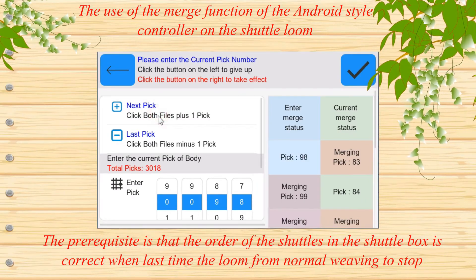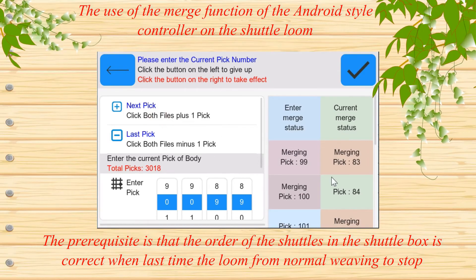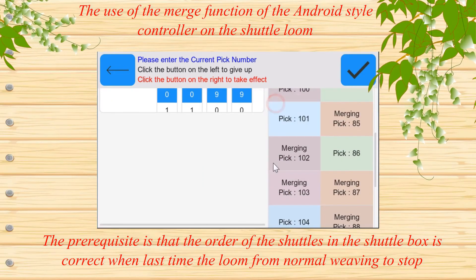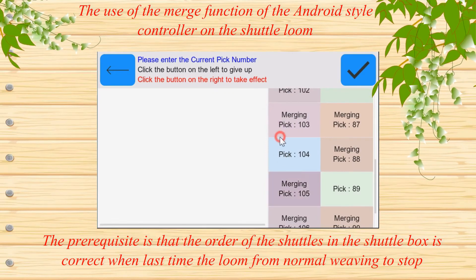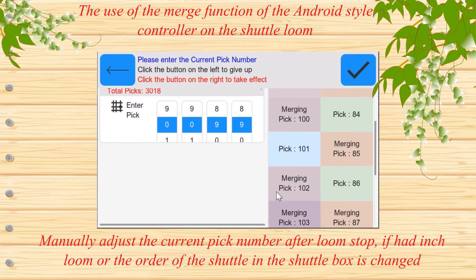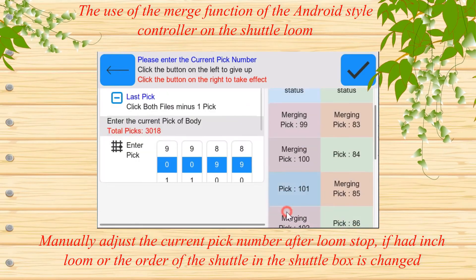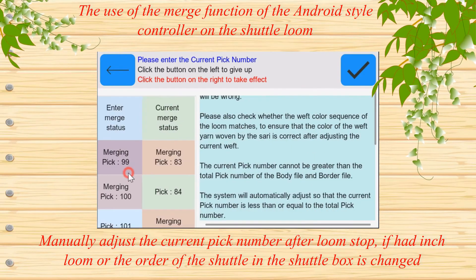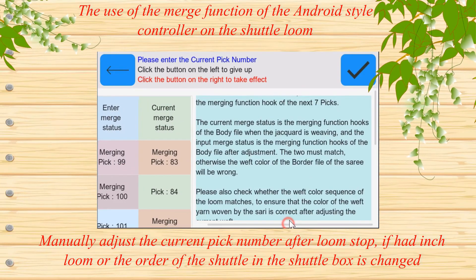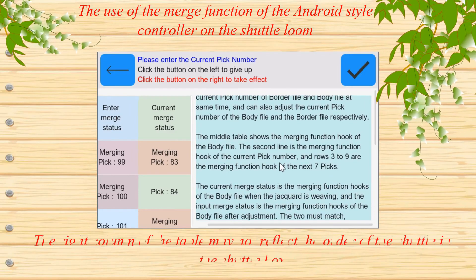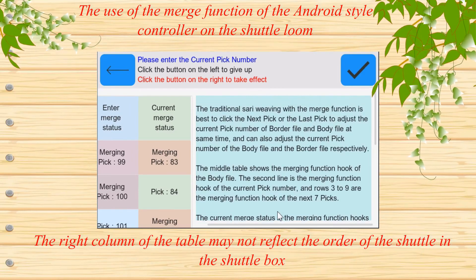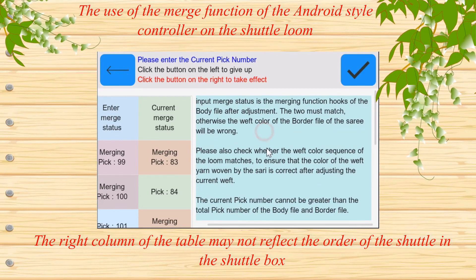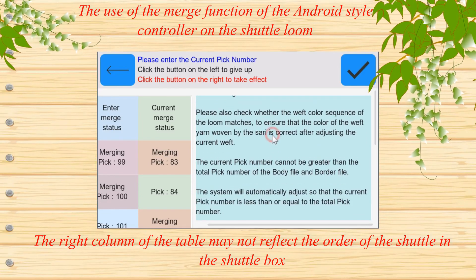The prerequisite for the right column is that the order of the shuttles in the shuttle box was correct when the loom last transitioned from normal weaving to stop. If the current pick number is manually adjusted after the loom stops, or if it is a head-inch loom, or if the order of the shuttle in the shuttle box is changed, the right column of the table may not accurately reflect the actual order of the shuttle in the shuttle box.